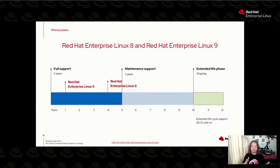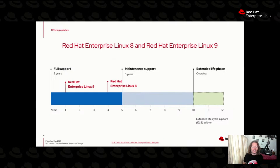You can get an idea of when to expect that release by doing some basic mathematics on our minor releases that come out every six months. About three weeks ago RHEL 9.2 was released, and two weeks ago RHEL 8.8 was released. You can add May plus six months to get a good idea of when to expect the next minor release, which helps you plan resource availability — for example, if you have to certify your application or infrastructure stack for environments like GovCloud.